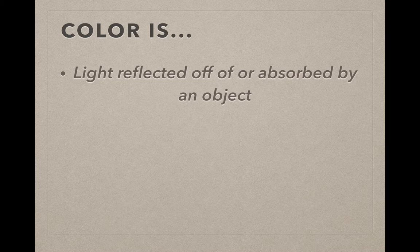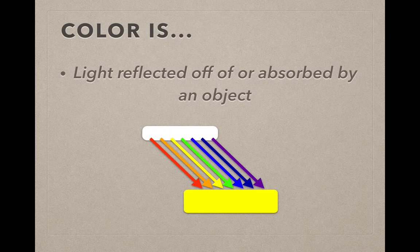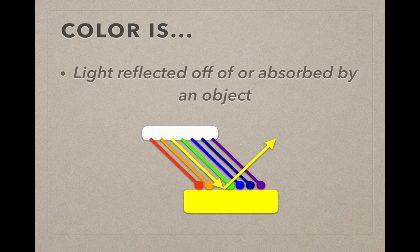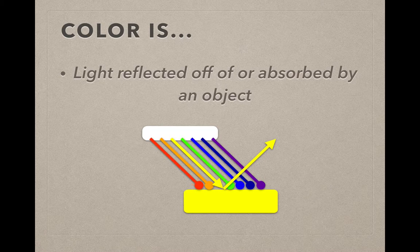First off, we need to understand what color is. Color is simply light being reflected off or absorbed by an object. That's a scientific as well as artistic definition. So in the example here, you have white light shining down on a yellow object. What your eye is actually perceiving when you're looking at the yellow object at the bottom is you're seeing all of that white light being absorbed except for that frequency of yellow. And so you end up seeing yellow.